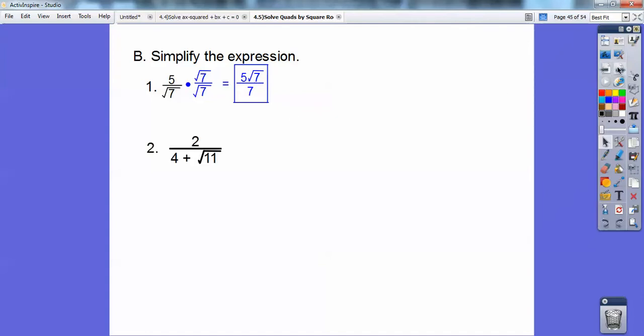When you see something like this, let me show you the real common error. Don't do this. This is an incorrect way. People want to multiply it by root 11 over root 11. You can do that. It's just not going to get to your answer.